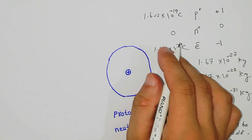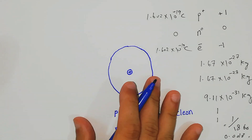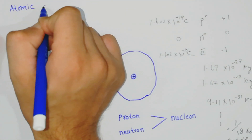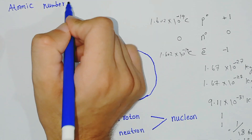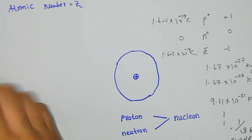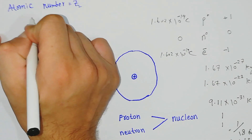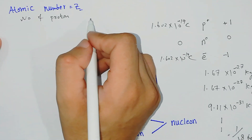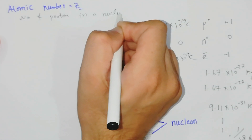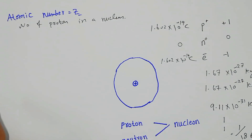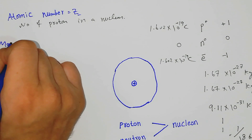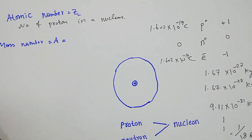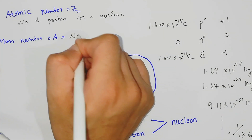An important term related to the atom is the atomic number, represented by Z, which is the number of protons present in the nucleus. The next term is mass number, represented by A, which is the number of protons and neutrons present in the nucleus.